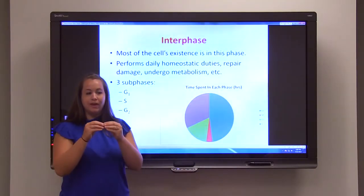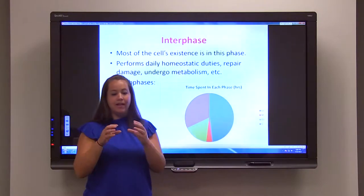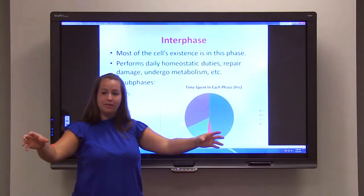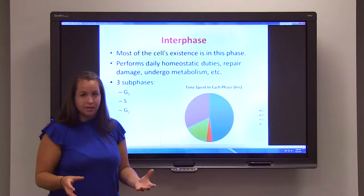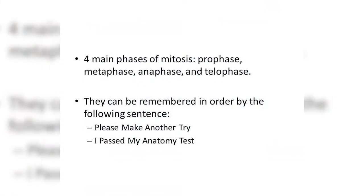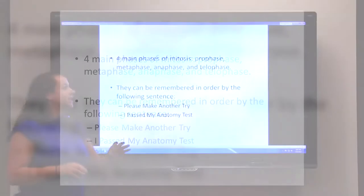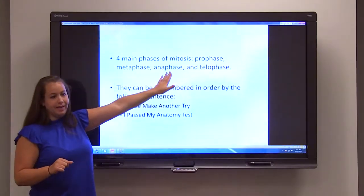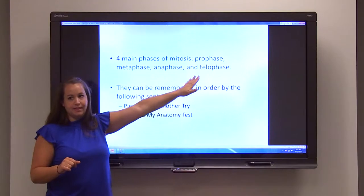There are four main phases of mitosis. Once the cell completes G1, S, and G2 of interphase, it moves on into prophase, metaphase, anaphase, and telophase.